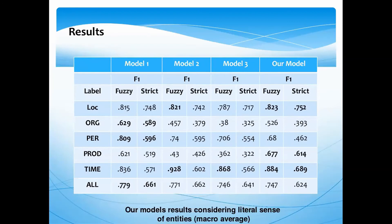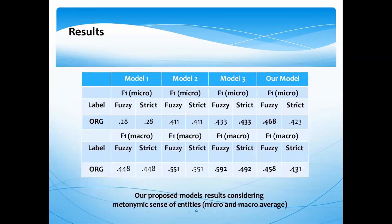Considering macro average with literal sense, our model always performs better than the others on LOC, PROD, and TIME entities. Considering the metonymic sense of entities, looking at both micro and macro average, the second and third models are performing better than the statistical one, and slightly better than ours when we consider strict F-measure for the micro average.